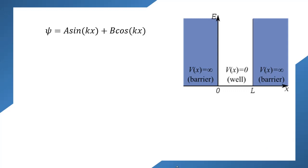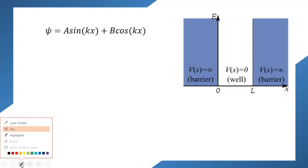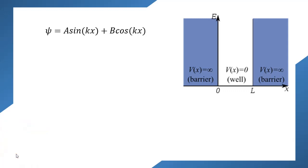Mathematically, the wave equation should be of this form — it should be wave-like in nature. Cosines and sines are wave-like in nature. Now let us introduce the boundary conditions and analyze how this wave actually behaves.